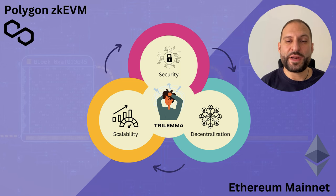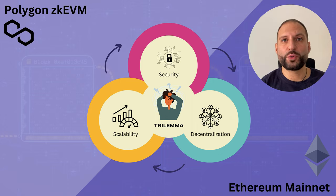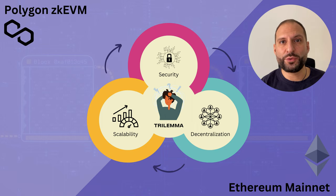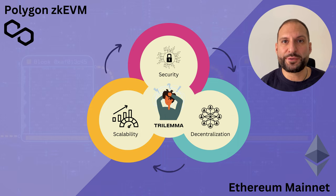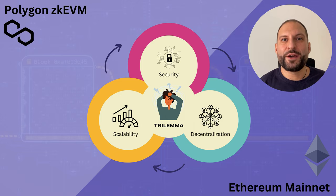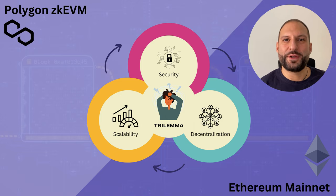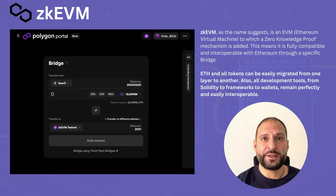This is because of the trilemma. The trilemma says empirically that it is impossible to reach the top of performance considering security, scalability, and decentralization. A blockchain developer has to trade off among the three aspects, reaching the best compromise. Now let's see what Polygon did with zkEVM.